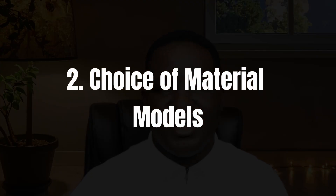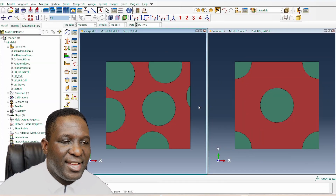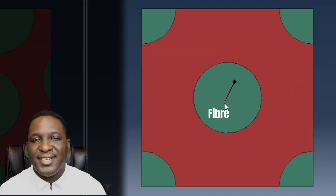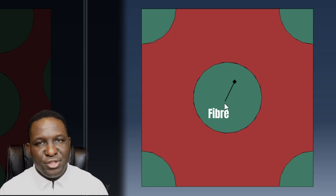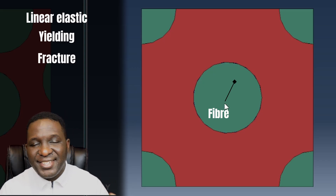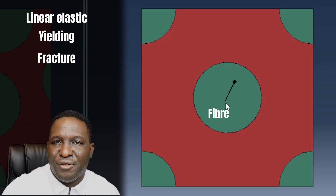The second thing you need to consider when modeling a representative volume element in Abaqus is your material modeling choice. You need to decide what material models you want to use. Because this is a representative volume element, you're going to separately model all the constituents that make up the system. Going back into Abaqus — this green region is a fiber. How do I model this fiber? I'm going to model it as a linear elastic material with yielding, fracture, and all that — an extensive material model for the fiber.